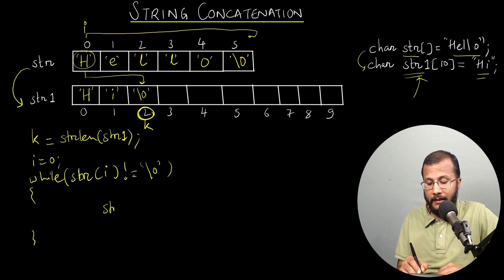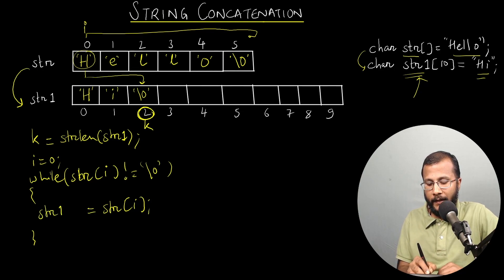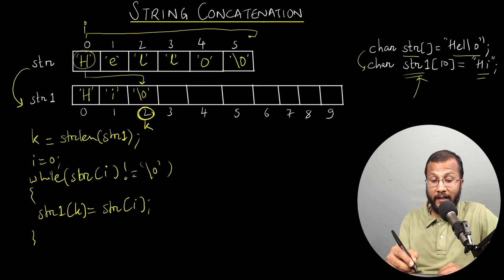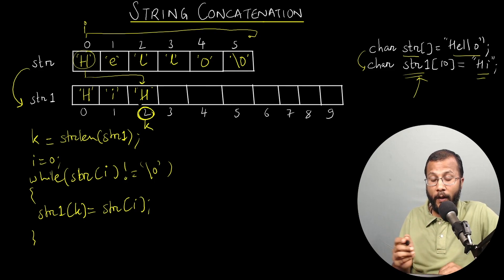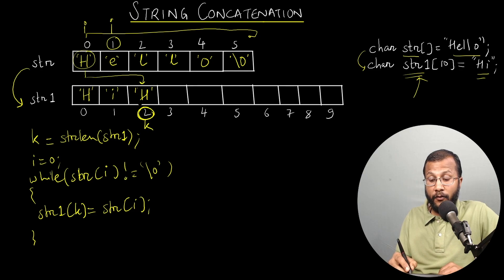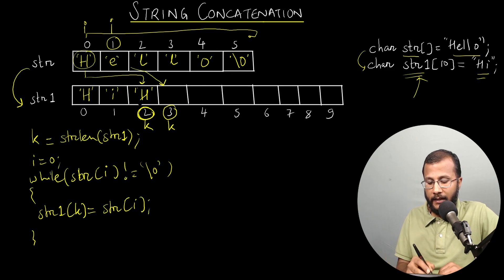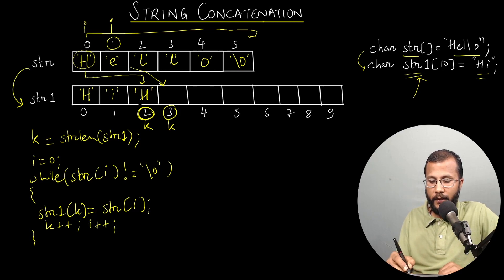So I'll copy str[i] — which holds 'h' — to str1[k], meaning 'h' is copied to index 2 of str1. At index 2 of str1 there was a null character, which is now overwritten by 'h'. Once one character is copied, I increment i so i becomes 1 (next character is 'e'), and I increment k because 'e' should be copied to index 3. So I write k++ and i++.